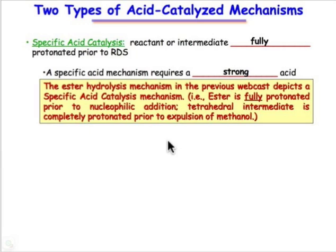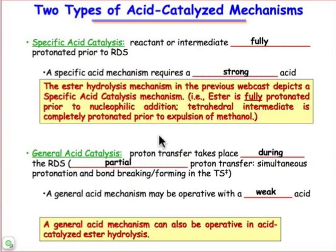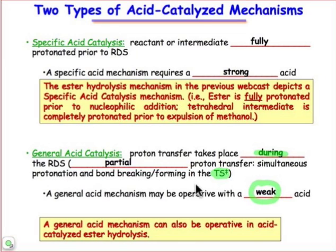What's new is the term general acid-catalyzed mechanism. In a general acid-catalyzed mechanism, we can accomplish this with a weak acid, because the proton transfer is only partial. It's taking place during the rate-determining step, and if something is taking place during a step, that means it must be happening at the transition state. There's going to be partial bond making and bond breaking to the proton, and the transition state will need to show that bond forming and bond breaking.